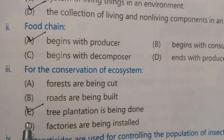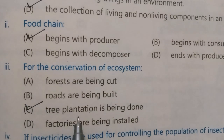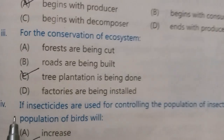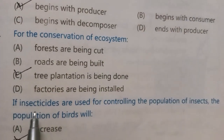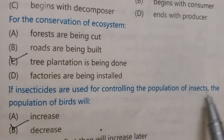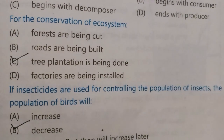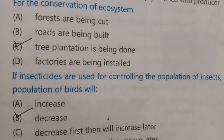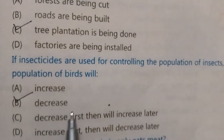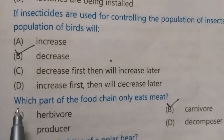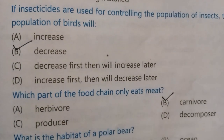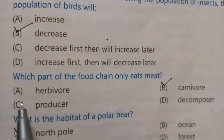For the conservation of the ecosystem, the correct answer is: tree plantation is being done. If insecticides are used for controlling the population of insects, the population of birds will — the correct answer is: decrease.